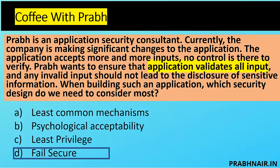That is why the answer is D. Least privilege is about necessary rights assigned to the user — the question is not about that. Psychological acceptability is about ease of transparency for the user. Least common mechanism is about resources not being shared — not mentioned in the question. The question is about disclosure of sensitive information: if the application fails, it should not reveal any information. That is why the answer is D for Delta.